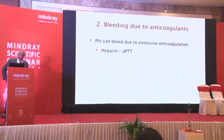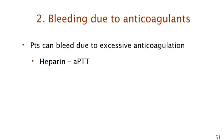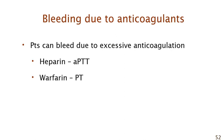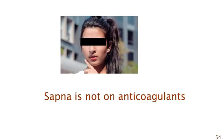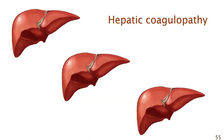Could it be anticoagulants? If on heparin, the APTT has to be high — Sapna's APTT was high. If on warfarin, the prothrombin time has to be high. If on DOACs — direct acting oral anticoagulants — you can bleed even without any change in PT and PTT. But Sapna is not on heparin, not on warfarin, not on DOACs. So anticoagulant-induced bleeding is also not relevant.